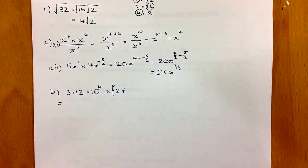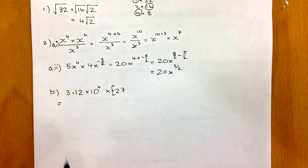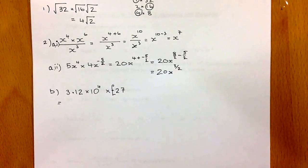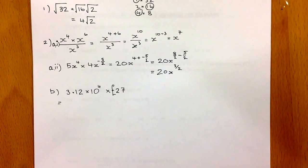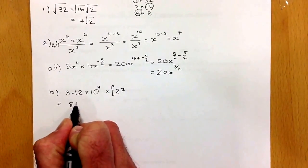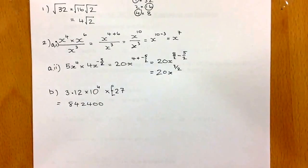If I do that on my calculator, I'll be putting into the calculator 3.12, and I'll be using the button in the middle at the bottom of the calculator which will give me the power. That will give me 10 to the power of 4, and I'll multiply that by 27. What should get out from that will be an answer of 84,240.